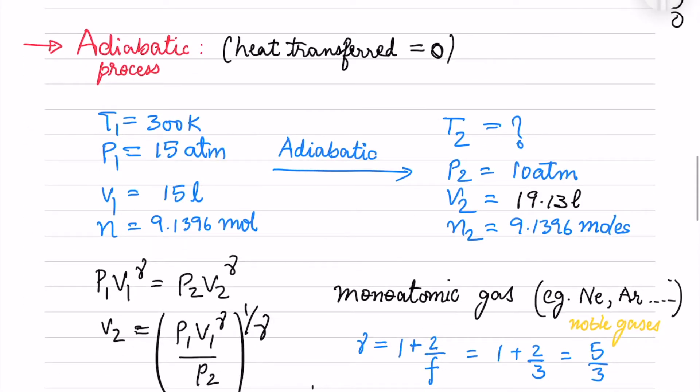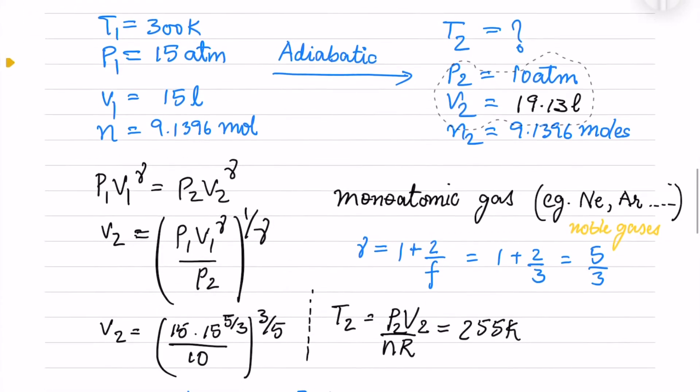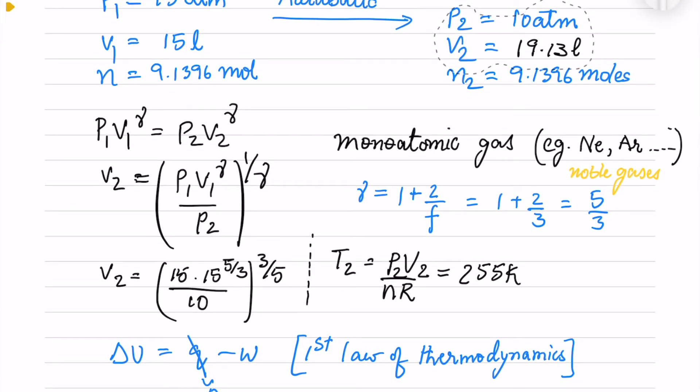For an adiabatic process, the heat transferred is 0. We have the initial properties, and in the adiabatic process we need to find T2 and V2. I use P1V1^gamma equals P2V2^gamma, from which I get V2 using this relation.